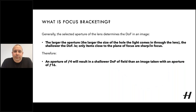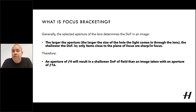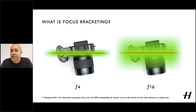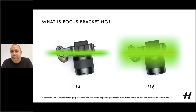What determines the depth of field in an image? The larger the aperture — the larger the size of the hole the light comes in through the lens — the shallower the depth of field. So only items close to the plane of focus are sharp. Therefore, an aperture of F4 will result in a shallower depth of field than an image taken with an aperture of F16. The depth of field can differ a lot on factors such as the choice of lens and the distance of the subject.